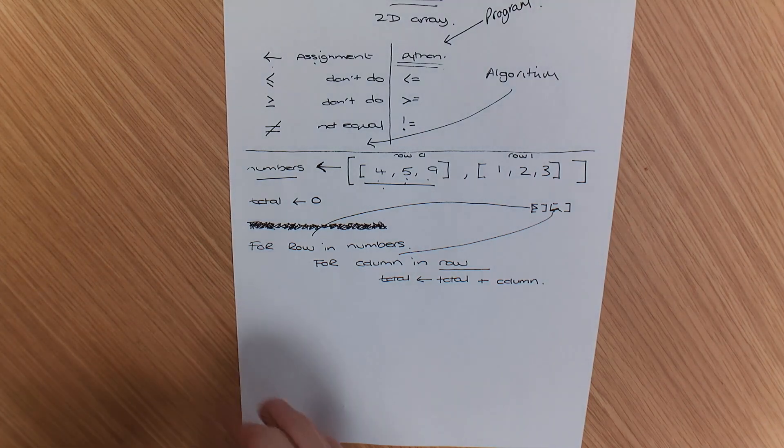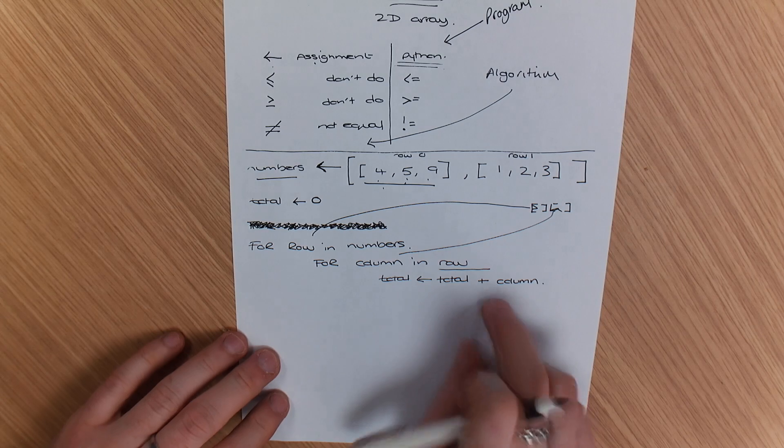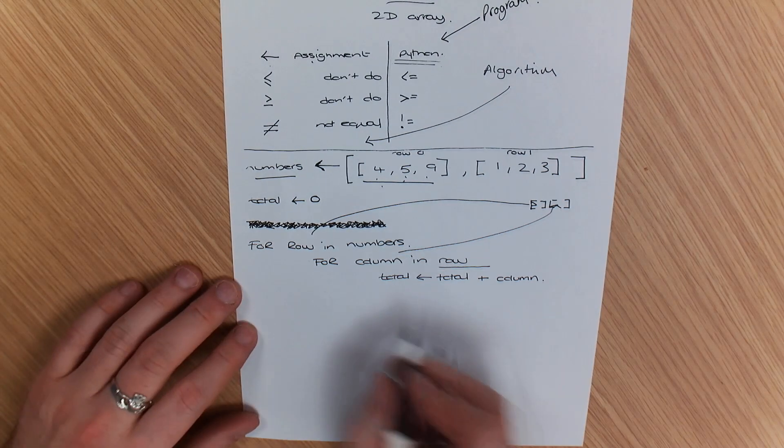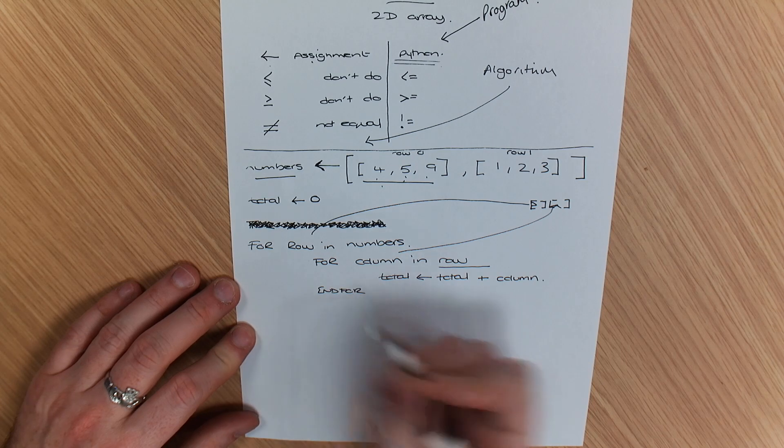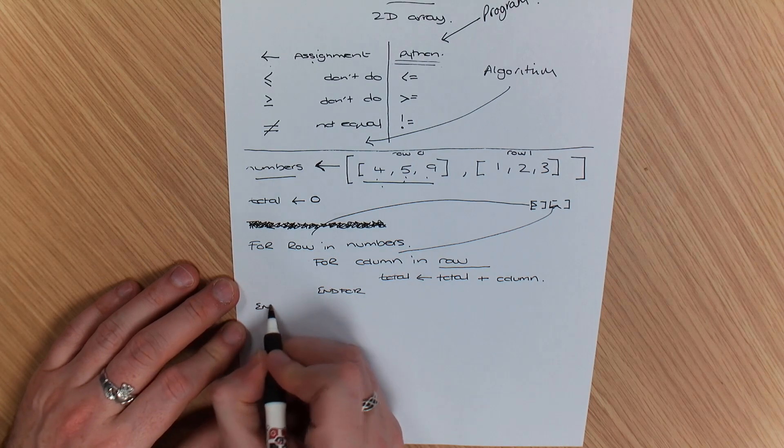So for row in numbers, for column, that is going to get that value and add it to the total. Then I can do end for, end for.